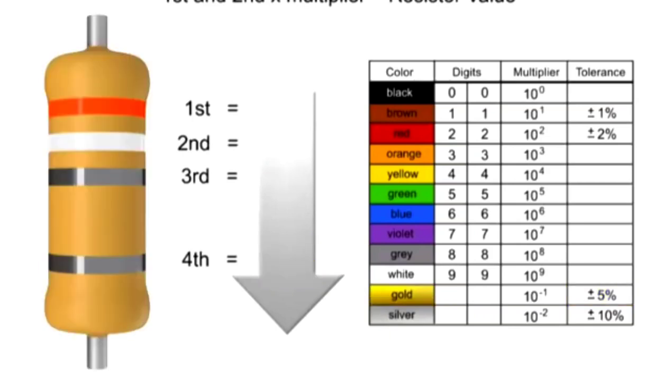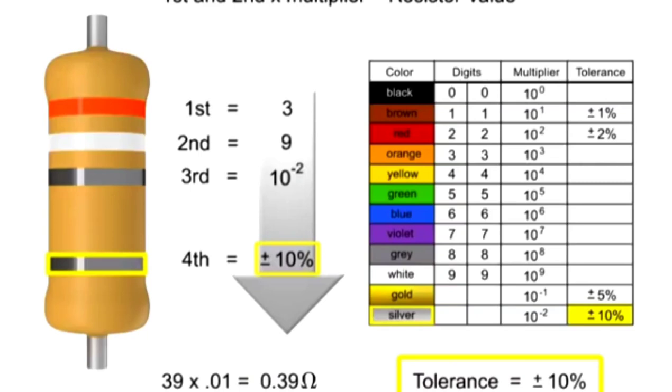In this example, the first band is orange, so the first digit is 3. The second band is white, so digit 2 is 9. The third band is silver, so we multiply the first two numbers by 10 to the negative second power, or 0.01. In this instance, we would take the 39 and move the decimal point two places to the left, resulting in a value of 0.39 ohms. Thus, the value of this resistor is 0.39 ohms with a tolerance of plus or minus 10%.